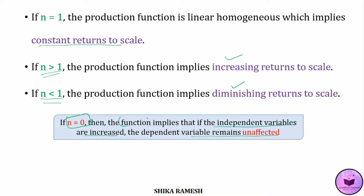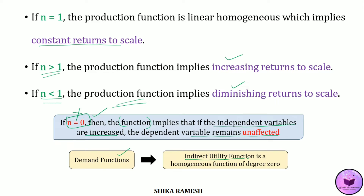It is to be noted that here I have only mentioned the term 'function' and not 'production function.' For a production function, the degree of homogeneity can never be 0, because if it is 0, it means that if the inputs are increased in the same proportion, the output remains unchanged, which is not applicable for a production function. The degree of homogeneity can be 0 for demand functions — for example, the indirect utility function is a homogeneous function of degree 0, meaning that if prices of all goods and consumer's income increase in the same proportion, the consumer's purchasing power remains unaffected, and the consumer will purchase the same quantity as before.